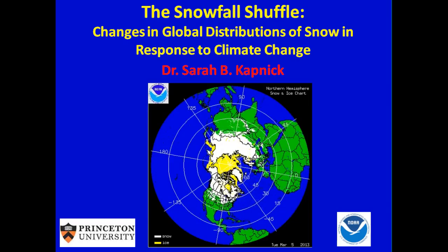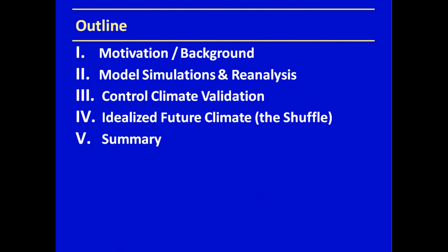Thank you. The first slide is just to orient us in the northern hemisphere. Right now, in March, you have mainly snow cover over all the land masses in the northern hemisphere — over North America and much of Europe and Eurasia. The snow cover is shown in white. Snow is a major part of the climate system. Today I'll go through some motivation and background, explain the model simulations and reanalysis we use, go through the current climate validation of the new GFDL model, give an idealized future climate of what snow is going to look like — otherwise known as the shuffle — and then a brief summary.